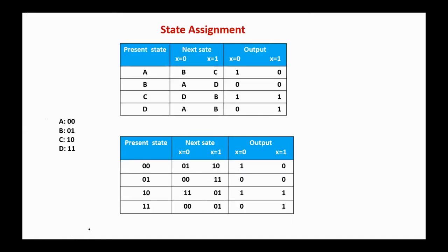In the reduced state table we have four states, so we need two bits to assign each state. We can assign the states in different ways. Here is one way: we assign 00 to A, 01 to B, 10 to C, and 11 to D. Here we have the state table after the state assignment.